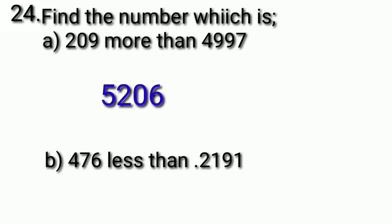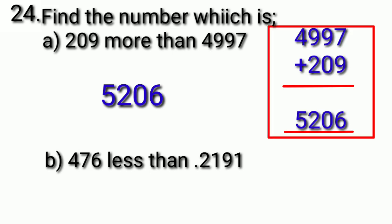We can do this addition on paper as shown. Part B: find the number that is 476 less than 2,191. To find this, we subtract 476 from 2,191, and after subtraction we get 1,715.